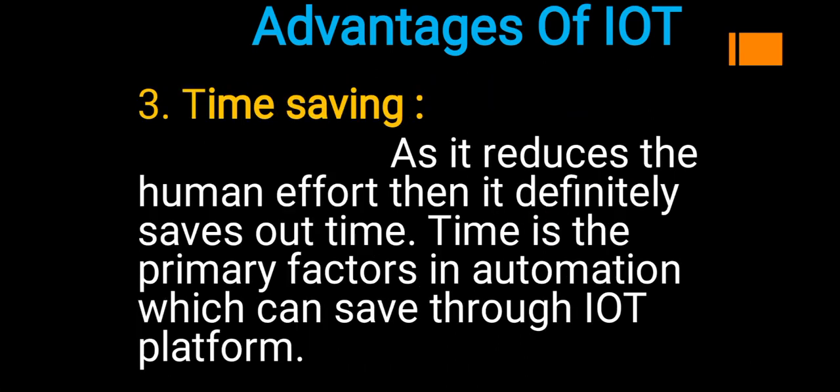The third advantage is time saving. As IoT reduces human effort, it definitely saves our time. Time is the primary factor in automation which can be saved through the IoT platform. For example, a task that takes 10 minutes in a manual system can be performed in just 2 minutes through automation.